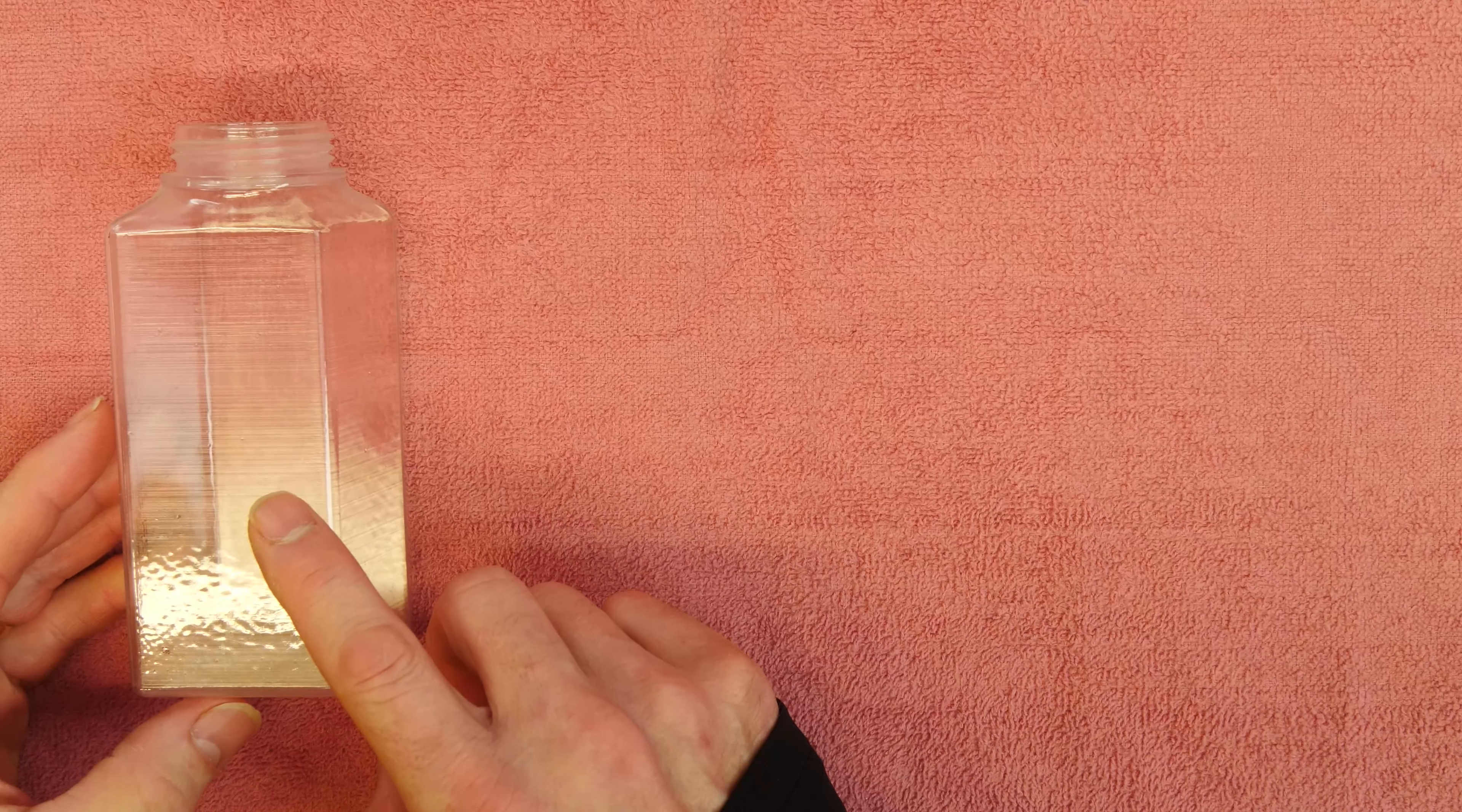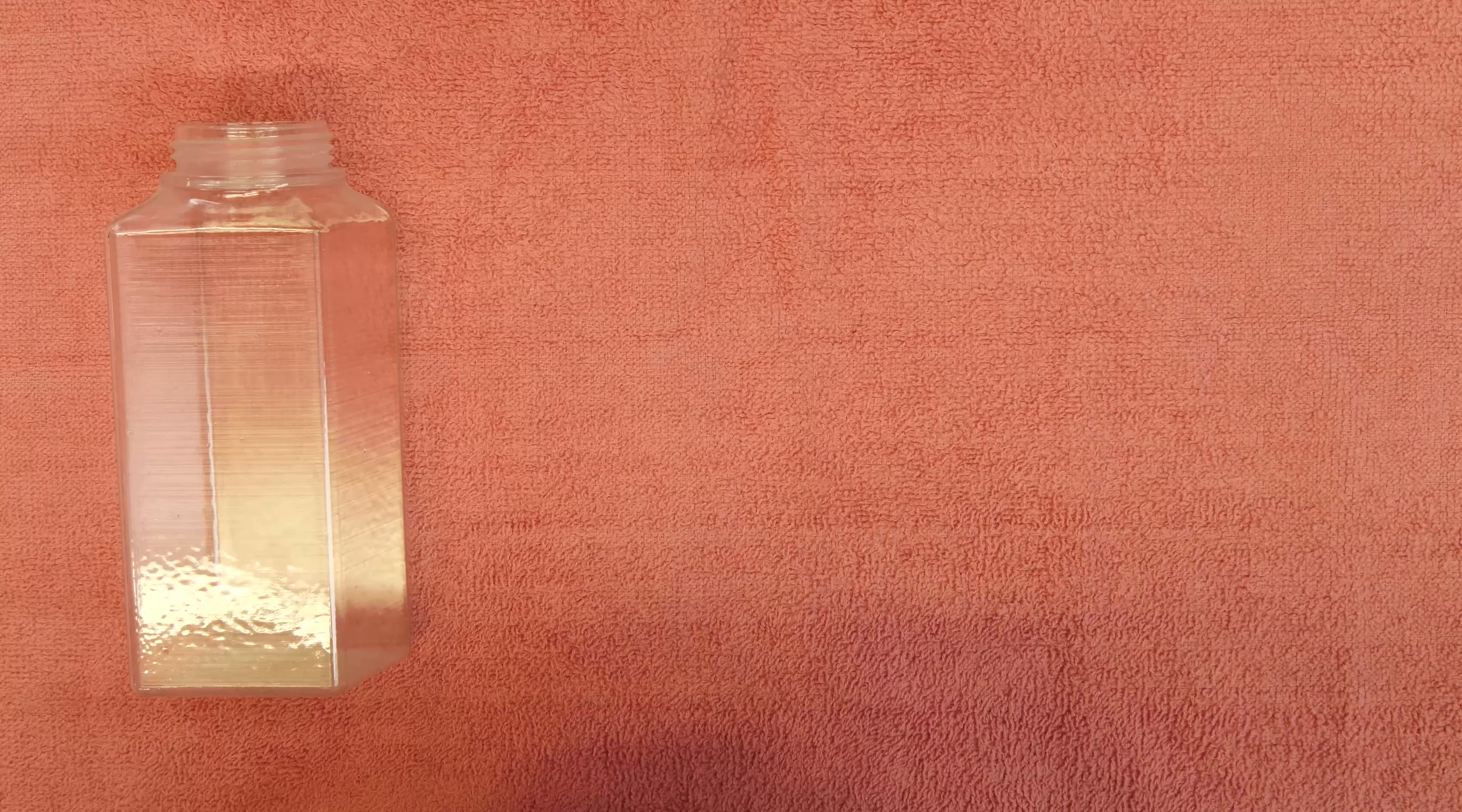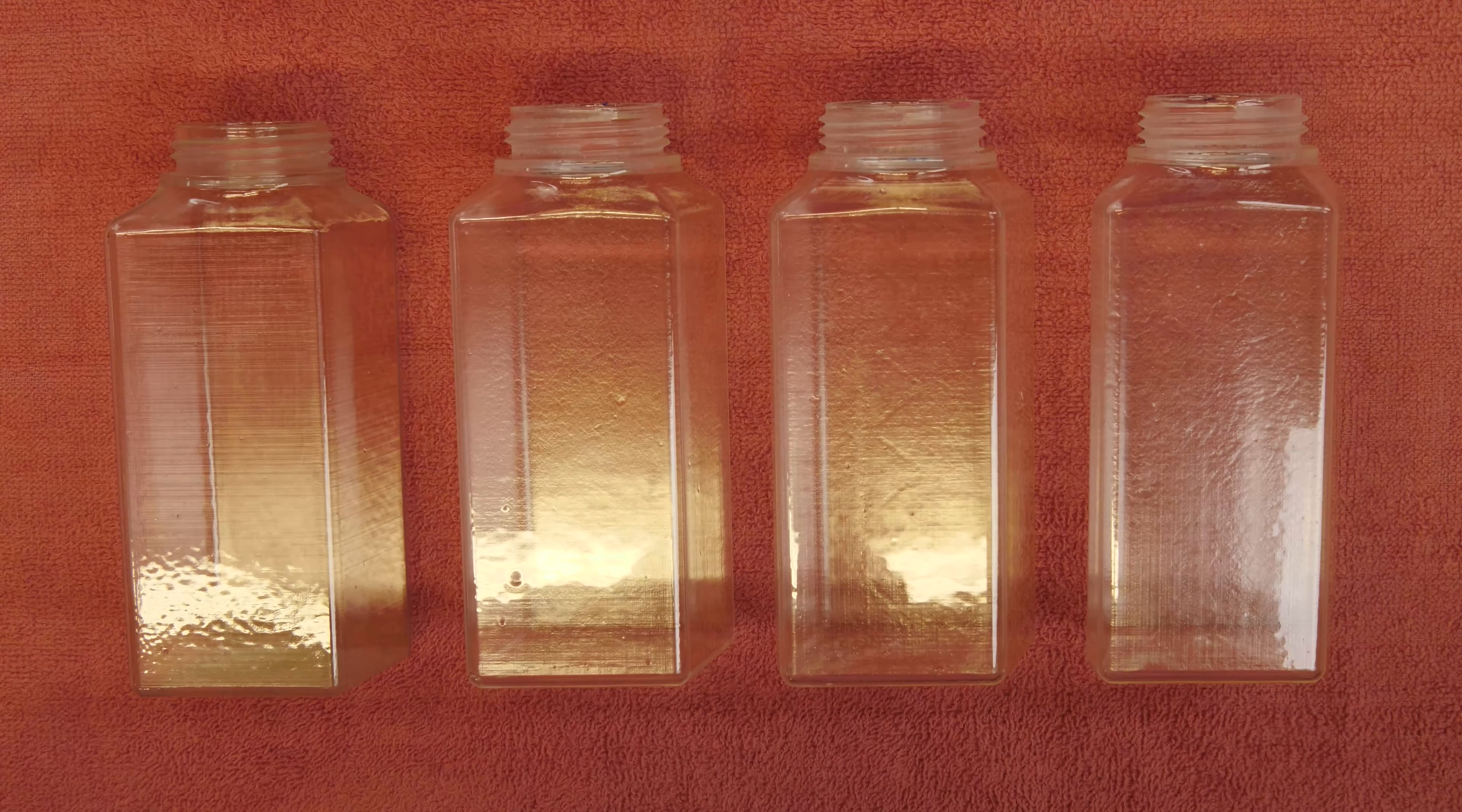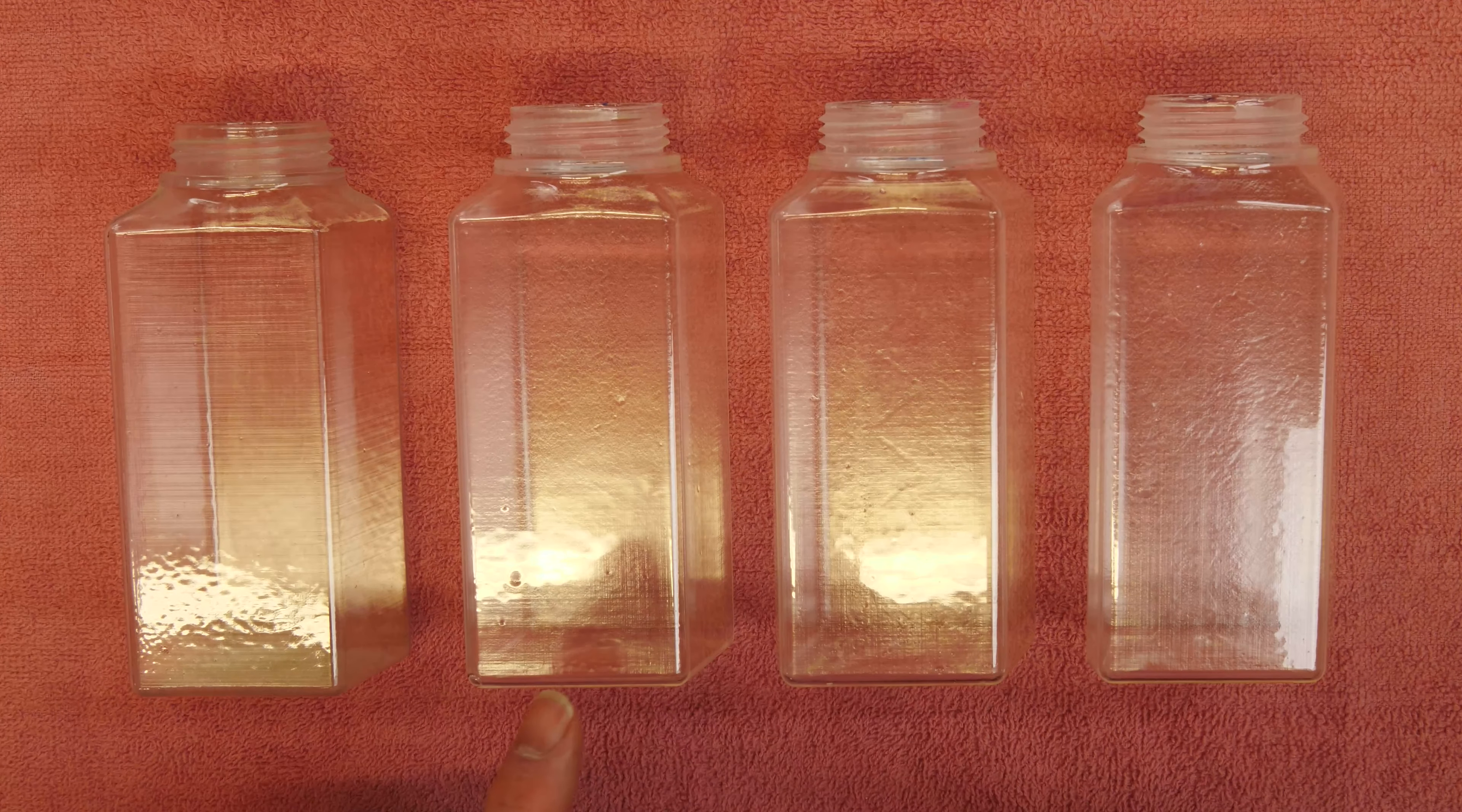This is the bottle from Stratasys that I did several years ago and you can see the build lines in there. Now these are the three bottles that we just printed on the Form 3 and you can see the build lines here. You can't see the build lines on any of these really. I also think this one's a little more yellow. These are a little bit more clear.